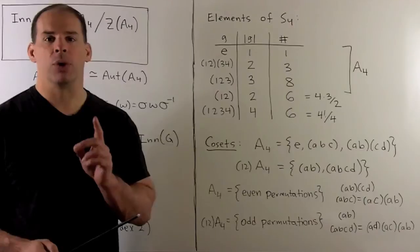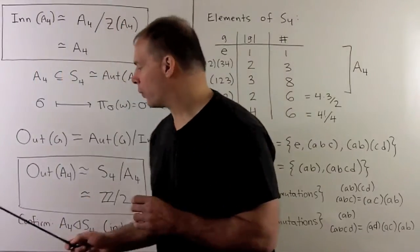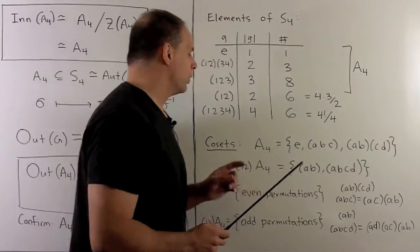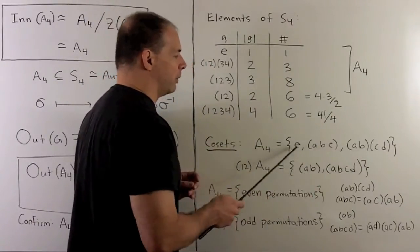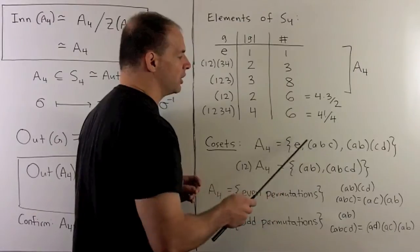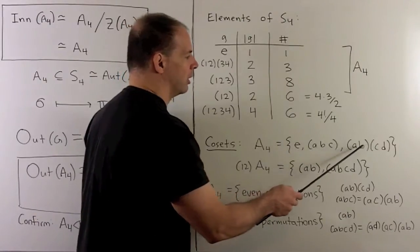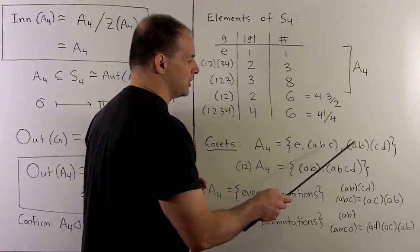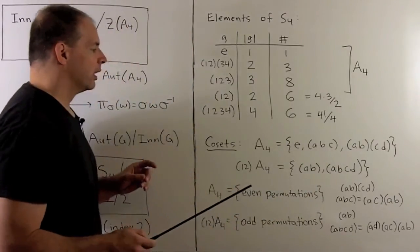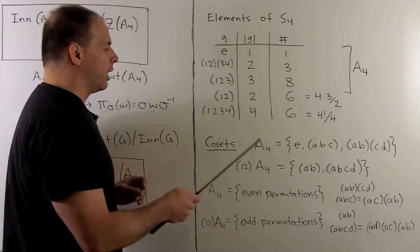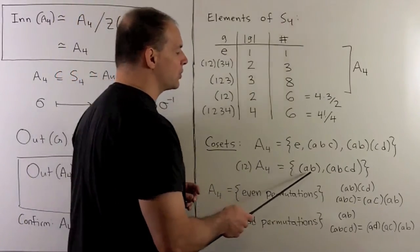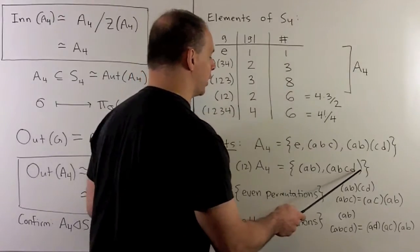What kind of cosets do we have for Out(A4)? First we have A4 itself, so I'll just label our permutations with generic letters. But that means take all permutations of that form. Then we have, I can just take any element that's not in here, so I'll take (1,2) times A4, and that gives us the two cycles and the four cycles.